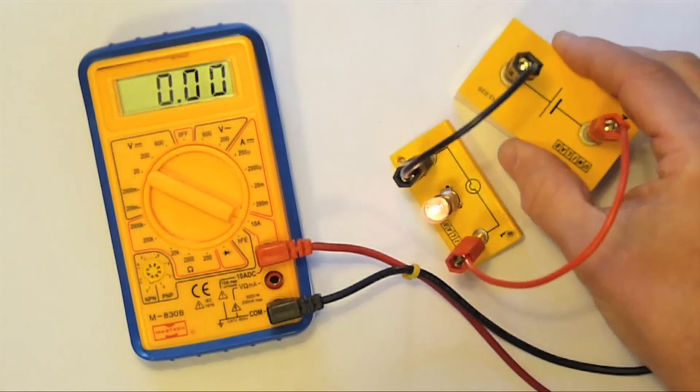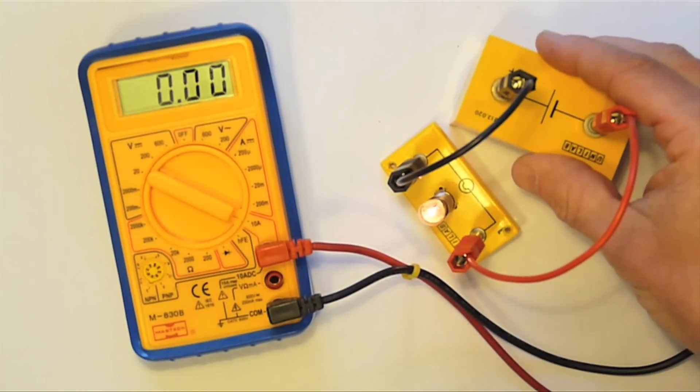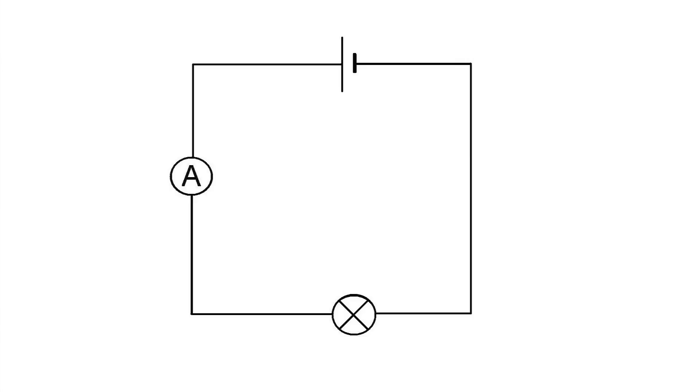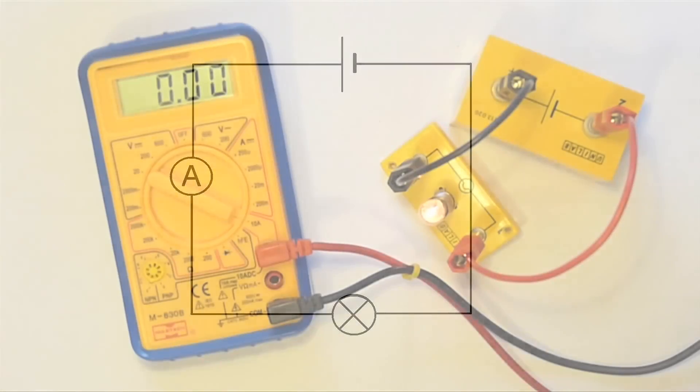Let's measure the current in this circuit. Ammeters are always connected in series. So I need to break the circuit and then complete it again with the ammeter in series.